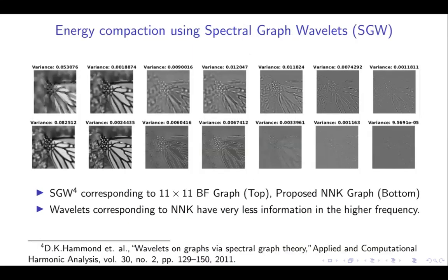In the following slide, we show experimental performance of proposed NNK representation using spectral graph wavelets. The spectral graph wavelet decomposition of a commonly used image with bilateral filter graph in the top row and proposed NNK graph is shown in figure. Frequency of the wavelets increases from left to right. The amount of information in a particular frequency band is proportional to the variance of the image in that band. As can be observed, wavelets corresponding to the proposed NNK method captures most of the image in its lower frequencies, indicative of a better image representation.